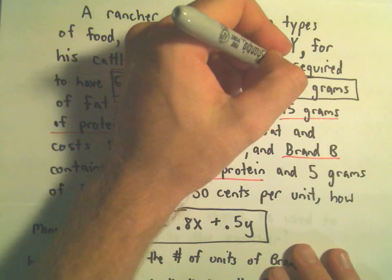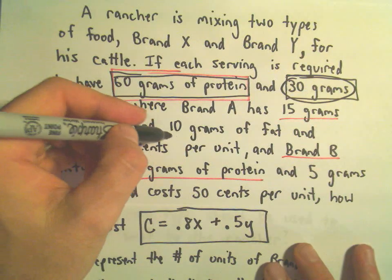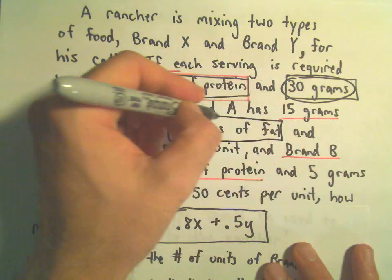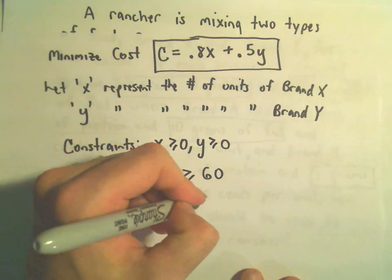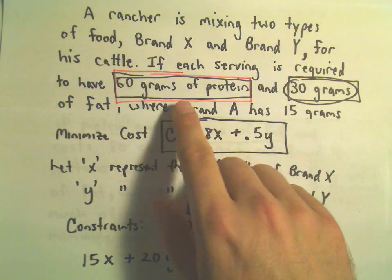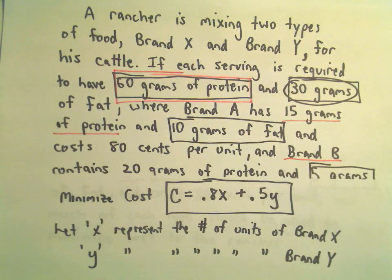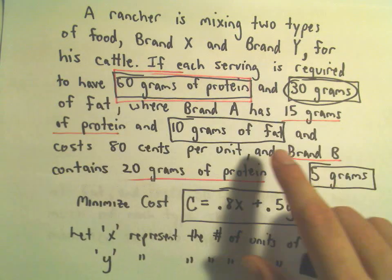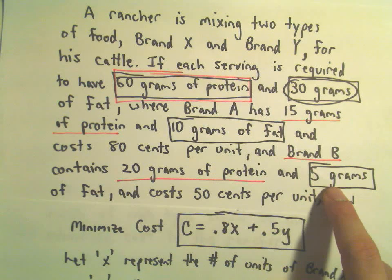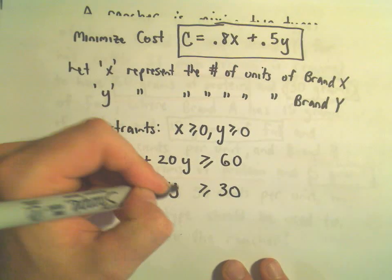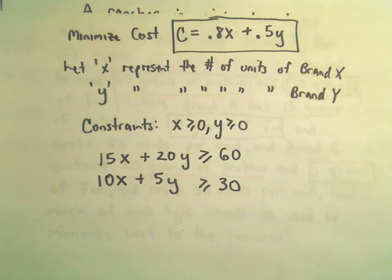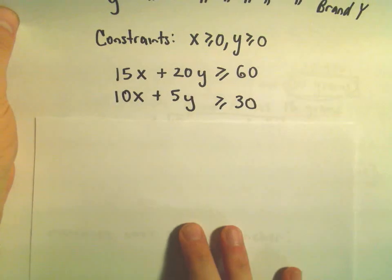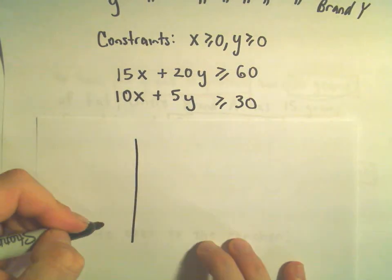We also need at least 30 grams of fat. Brand A has 10 grams of fat per unit, and brand B has 5 grams of fat per unit. So we need 10X plus 5Y greater than or equal to 30. I think that's all of our constraints. Now we can graph the region, find our corner points, and use those to find our minimum value.